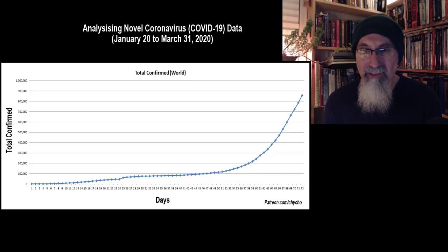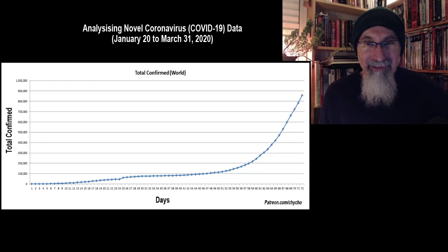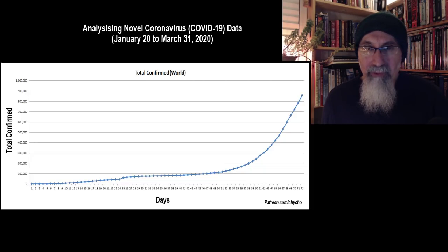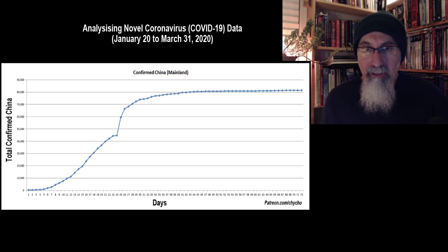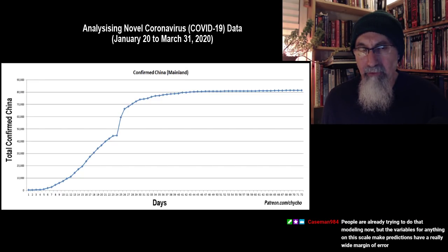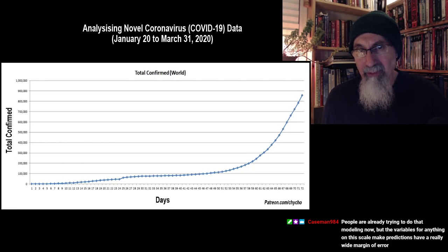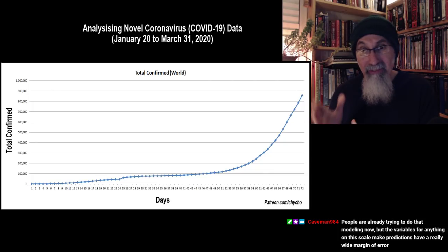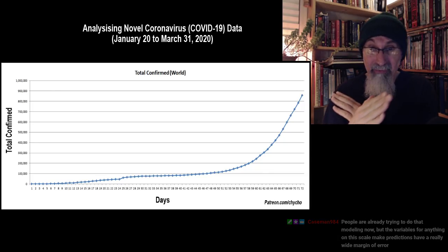If you know mathematics, you rule your own world — you're not a slave to centralized power telling you what's going on. The second graph is total confirmed cases in China, which has basically died down. The previous graph includes China as well as countries outside of China, and the world graph is still going pretty steep.